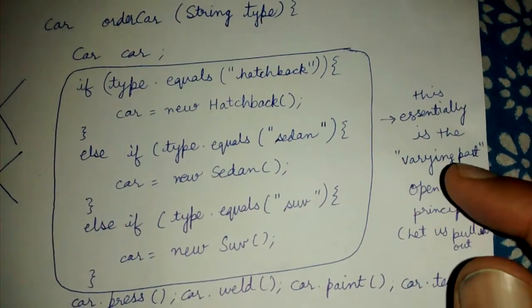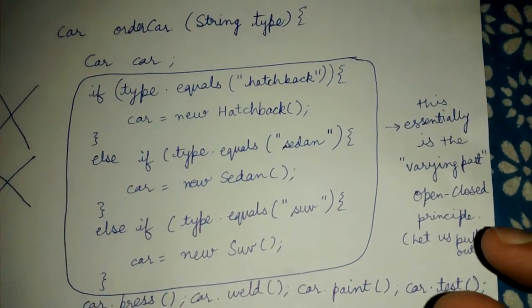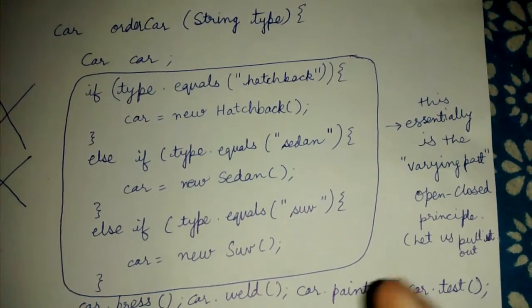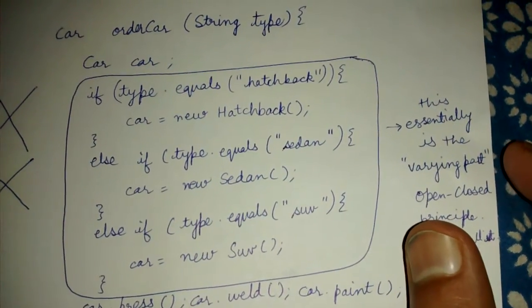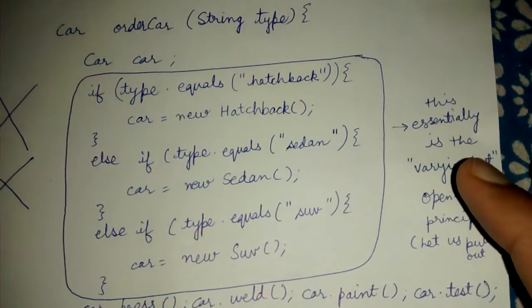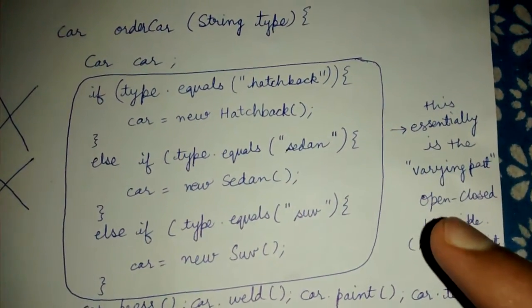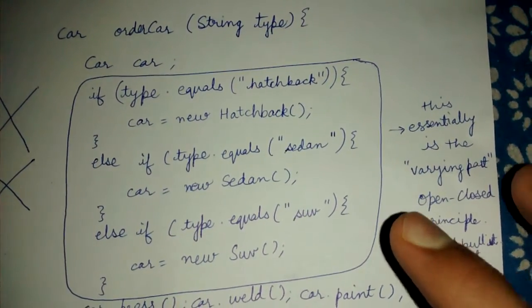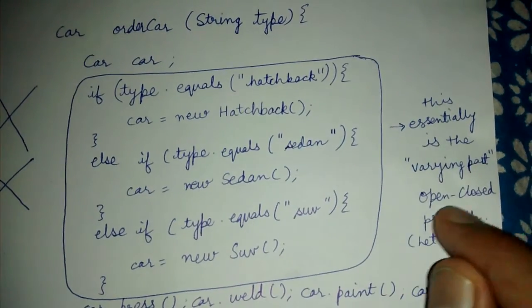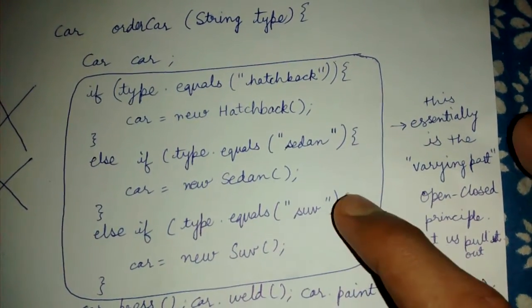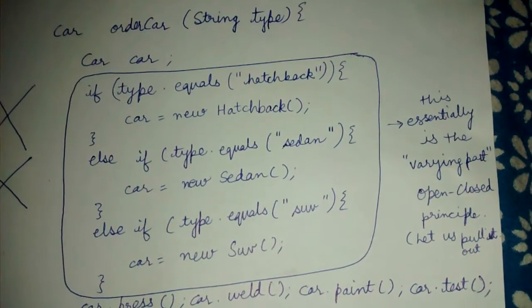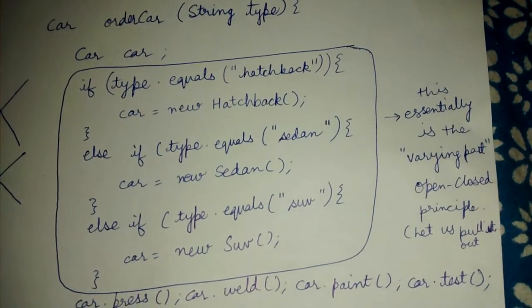Open-closed principle says we should have our code open for extension. We could add more classes to our code, we could inherit our code into new classes, but we should not open the existing source code files and change them. This is the O in SOLID. I have created a separate video, please look at that.